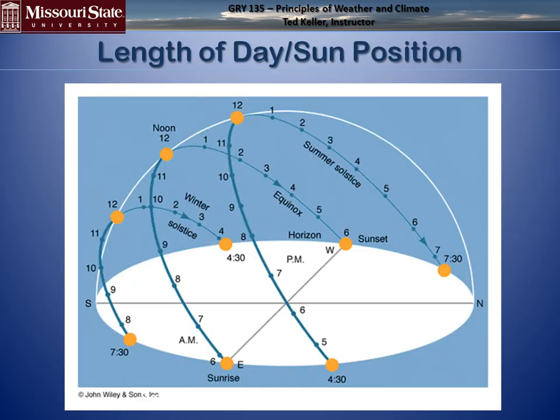Here's a quick example of how the Sun's path changes with the seasons. At the winter solstice, the Sun rises in the southeast and sets in the southwest — a shorter path, so a shorter day. During the summer solstice, it rises in the northeast and sets in the northwest — a longer path, so a longer day.